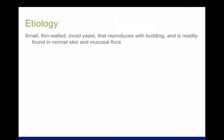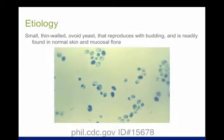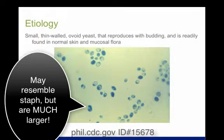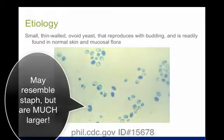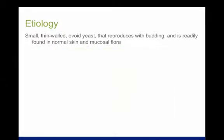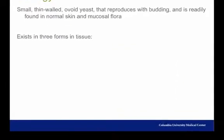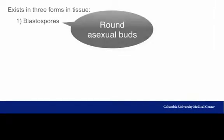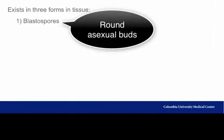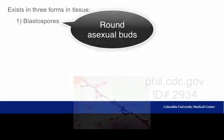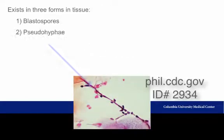Candida is a small ovoid yeast that reproduces with budding. Candida may be visible on gram stain, and sometimes the yeast may resemble staph species. In the tissue, Candida exists in three forms. The most common is as round blastospores, but in disease states, they may also exist as pseudohyphae or hyphae.